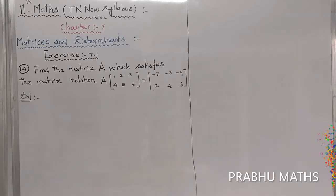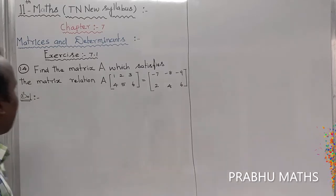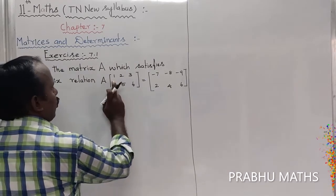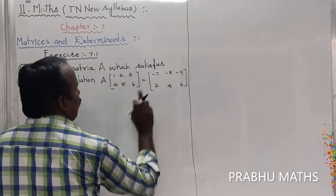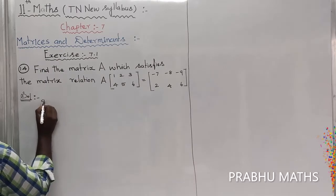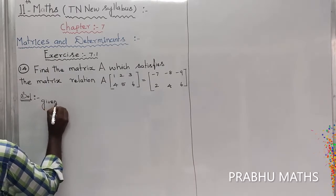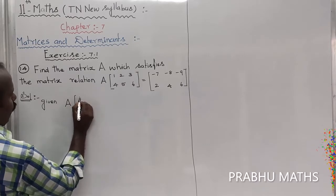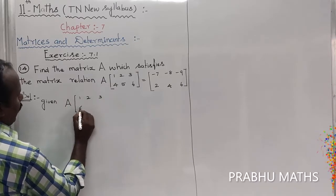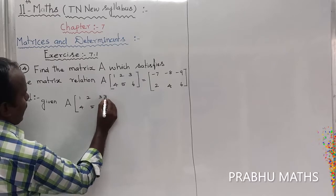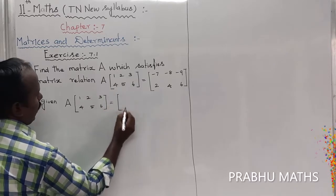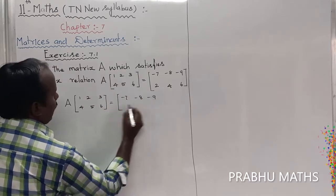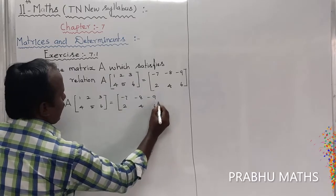Find the matrix A which satisfies the matrix equation A into [1, 2, 3; 4, 5, 6] is equal to [-7, -8, -9; 2, 4, 6]. So the given matrix equation has A multiplied by a 2 by 3 matrix equaling a 2 by 3 result.